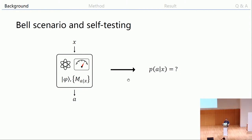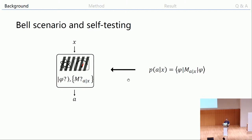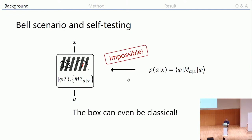Now suppose this box can be quantum, but you don't know exactly what state it is preparing or what measurement it is performing. We can model its behavior as a state preparation and a measurement on the state according to the question it receives. If I know the states and measurement operators, I can predict the probability distribution — just do matrix multiplication, sandwich the measurement operator with the state vector.